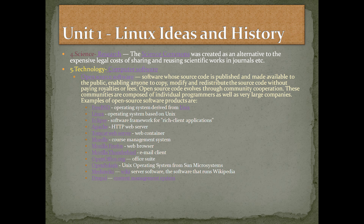Open source code evolves through community cooperation. Let's say I developed a code and somebody copied it. They had an idea — if I change the code a little bit, it can perform better or do some more things. Why not add a feature? Why not make it more effective? Those kind of things. So open source code evolves through community cooperation.